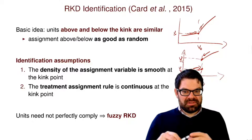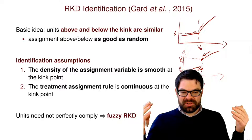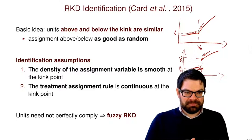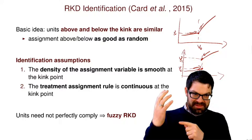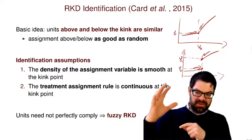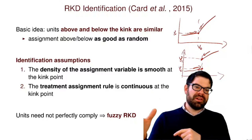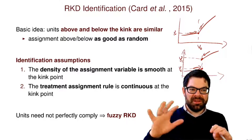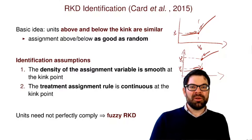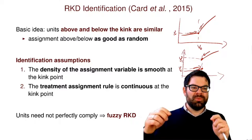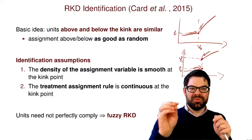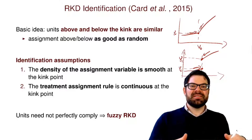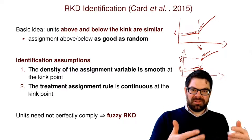Do units need to comply perfectly with the assignment rule? Of course not — we can also have a fuzzy regression kink design. This technique is quite new; the methods paper that introduced it only came out a couple of years ago. There is still a lot we don't know about inference, and about what the right polynomial to impose above and below the kink point should be. This is a method that is constantly developing.